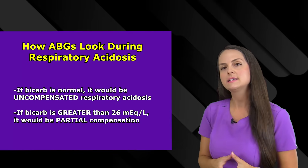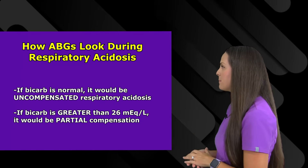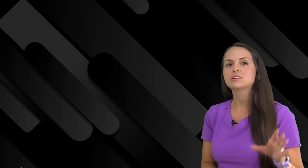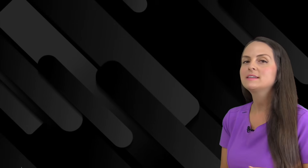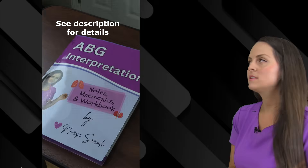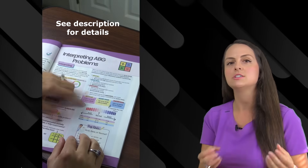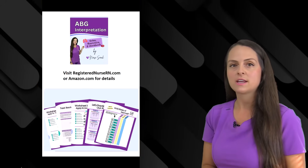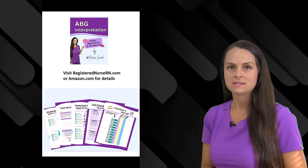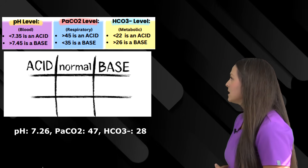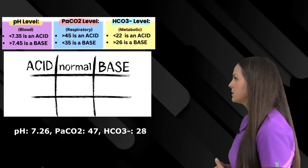Now let's actually solve an ABG problem. We're going to work through this using the tic-tac-toe method. This problem comes from my ABG workbook, which has practice problems and cheat-sheet-style notes to help you understand acid-base imbalances. The patient has a blood pH of 7.26, a PaCO2 of 47, and a bicarb HCO3 of 28. First, we set up our tic-tac-toe grid — acid on the left, normal in the middle, base on the right.